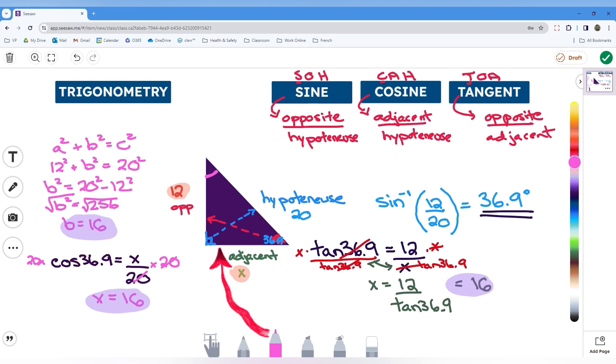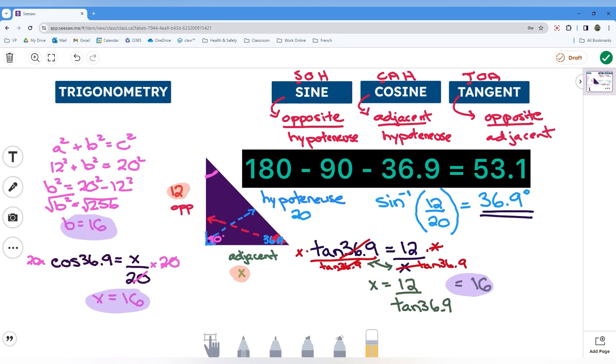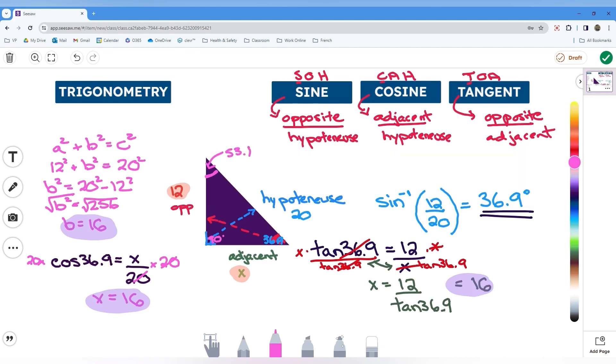This 90 degrees is always going to be in this corner opposite that hypotenuse. That's what a right angle is, 90 degrees. If you take 180 and subtract 90 and subtract 36.9, we have 53.1. So that would be the third angle that is missing in here. And now we have completely solved this triangle for all sides and all angles.